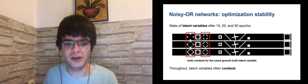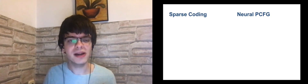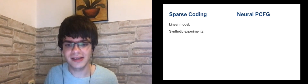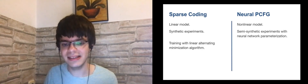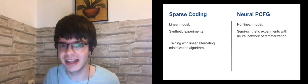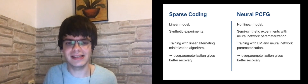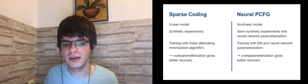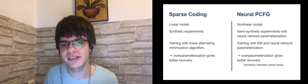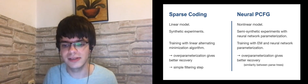We also perform similar experiments in sparse coding models and neural probabilistic context-free grammar models. For sparse coding, we have a linear model with synthetic experiments and training with a linear alternating minimization algorithm. For neural PCFG, we have a non-linear model with semi-synthetic experiments with a neural network parametrization — we train that model on a text corpus, generate samples according to it, and train with a form of EM with a neural network parametrization. In both cases, overparameterization gives better recovery. However, in the neural PCFG case, recovery of the latent variables themselves is challenging, so we measure recovery with a similarity metric between parse trees. In the sparse coding case, recovery is easy and we can also design a simple filtering step.